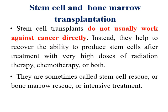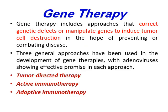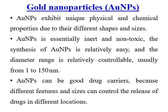Stem cell and bone marrow transplantation: stem cell transplants don't usually work against cancer directly; instead, they help recover the ability to produce stem cells after treatment with very high doses of radiation therapy, chemotherapy, or both. Gene therapy: in the hope of preventing or combating disease, three general approaches have been used in the development of gene therapy — tumor-directed therapy, active immunotherapy, and adoptive immunotherapy.